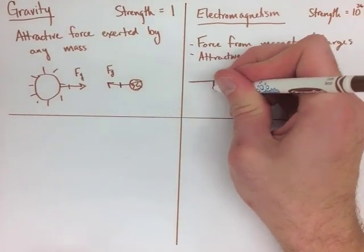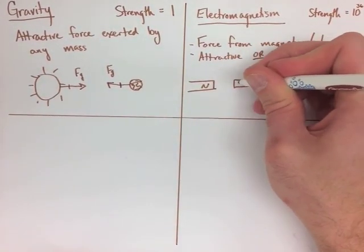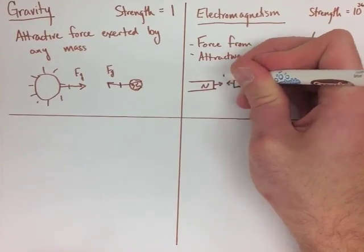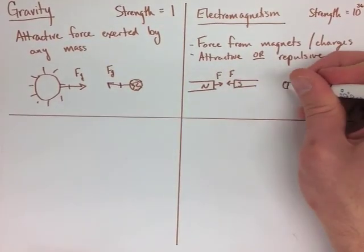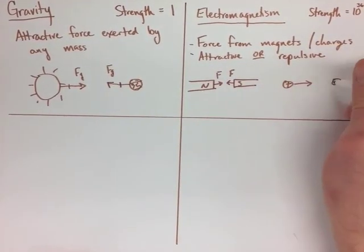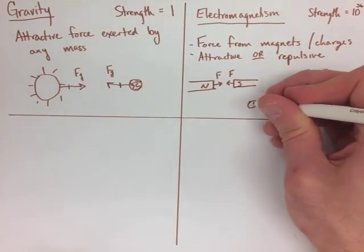So when we're looking at this, we have to look at both the attractive force and the repulsive force. So magnets and north and south are going to attract each other. Likewise, a positive and negative ion will also attract each other.